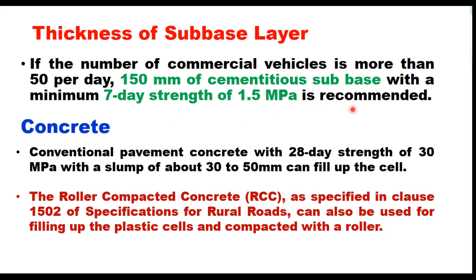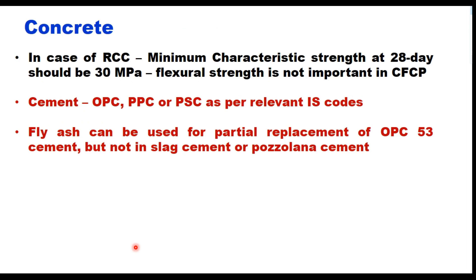After providing the subbase and protection layer on both sides, you design the concrete mix. It can be either conventional pavement concrete with 28-day strength of 30 MPa and slump of about 30 to 50 mm (i.e., M30 mix), or roller compacted concrete (RCC) as specified in clause 1502 of specifications for rural roads. RCC can also be used to fill the plastic cells and be compacted with a roller. The minimum characteristic strength for RCC remains 30 MPa, but flexural strength is not a major consideration since load transfer is not through slab action.